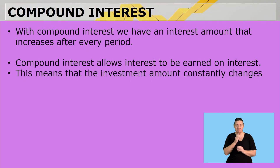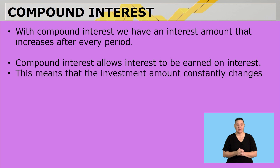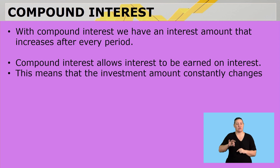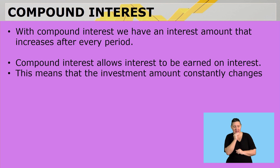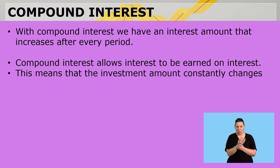With compound interest, we have an interest amount that increases after every period. Compound interest allows interest to be earned on interest, meaning that the investment amount is constantly growing or constantly changing.